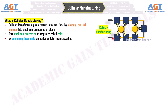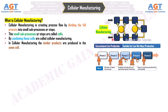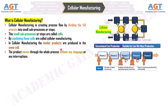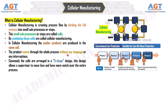In cellular manufacturing, similar products are produced in the same cell. The product moves through the whole process without any stoppage or any interruptions. Commonly, the cells are arranged in a U-shaped design. This design allows a supervisor to move less and have more oversight over the entire process.